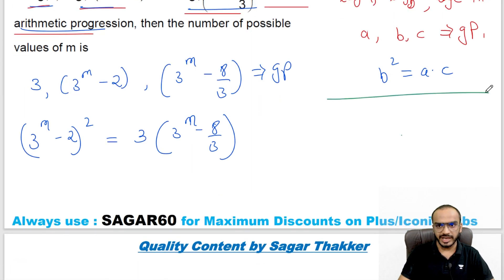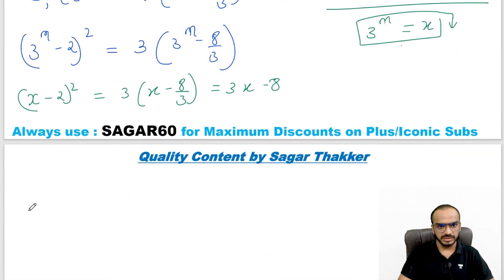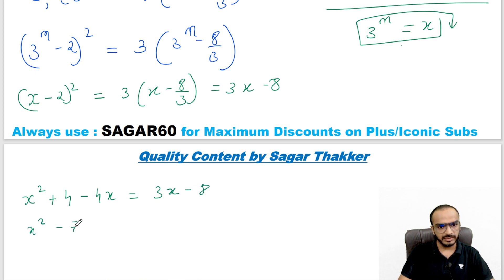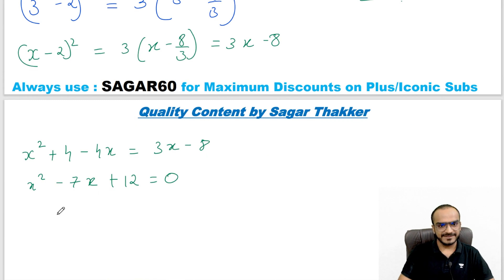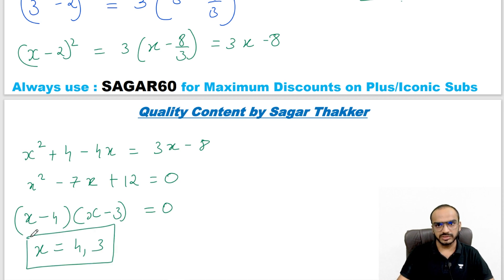For a GP, b² = a·c. So (3^(m−2))² = 3^m × 3^(m−8/3). For simplification, let 3^m = x. Then (x − 2)² = 3x − 8, which expands to x² − 4x + 4 = 3x − 8. Rearranging: x² − 7x + 12 = 0, which factors as (x − 4)(x − 3) = 0.